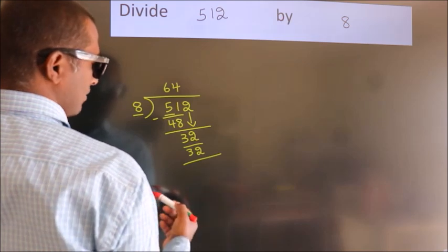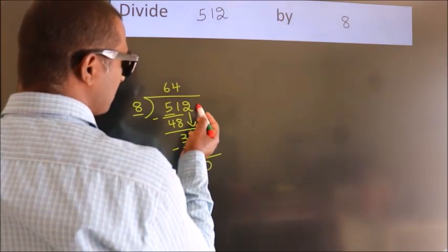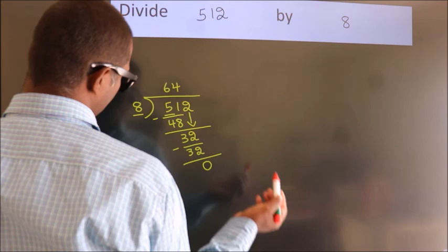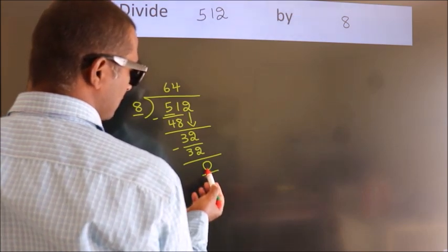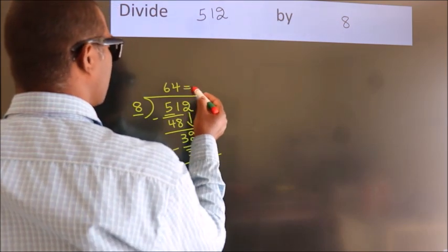Now, after this, no more numbers to bring it down. And, we got remainder 0. So, this is our quotient.